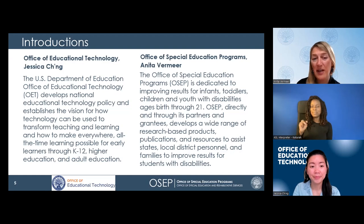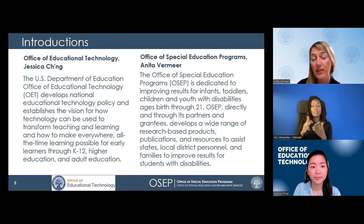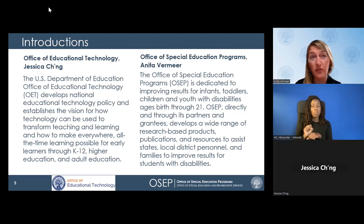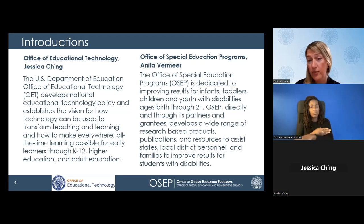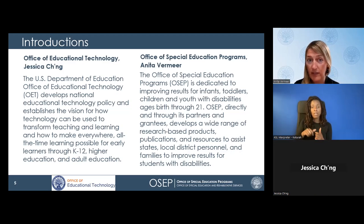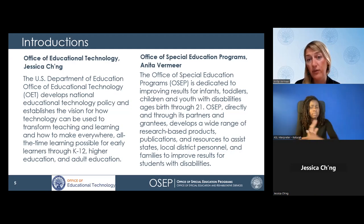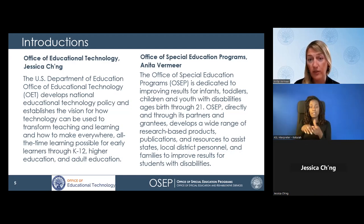My name is Anita, and I'm from the Office of Special Education Programs. I'm described as a white female with long blonde hair. I've spent most of my career working as a teacher, coach, technology specialist, and district administrator. Currently I support projects in this office, and we are dedicated to improving results for infants, toddlers, children, and youth with disabilities, ages birth through 21. OSEP directly, and through its partners and grantees, develops a whole range of research-based projects, publications, and resources to assist states, local district personnel, and families to improve results for children and students with disabilities.